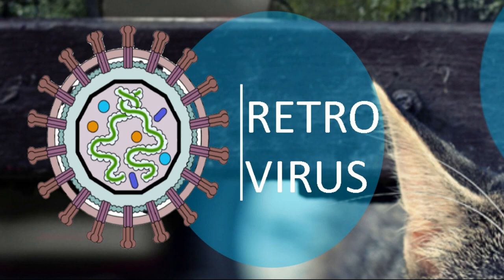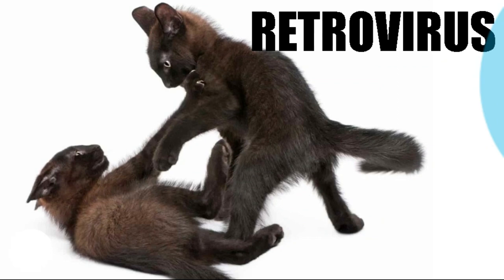Feline AIDS primarily attacks non-neutered male cats that circulate on rooftops and fight with other cats, because the disease is transmitted through different secretions, mainly saliva and blood. It is transmitted through wounds and bites during fights. Additionally, a male can transmit this disease to females at the time of intercourse when he bites her.